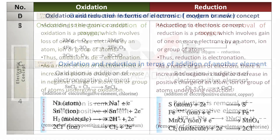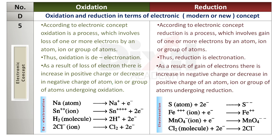Point number 5: According to the electronic concept, oxidation is a process which involves loss of one or more electrons by an atom, ion, or group of atoms. Thus, oxidation is de-electronation. As a result of loss of electrons, there is an increase in positive charge, or decrease in negative charge, of the atom, ion, or group of atoms undergoing oxidation. In the following examples, sodium atom, Sn2+ ion, H₂ molecule, and Cl⁻ ion undergo oxidation.